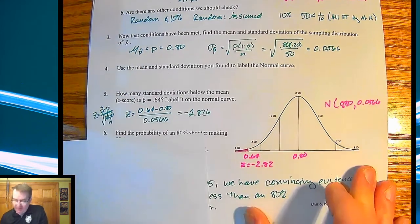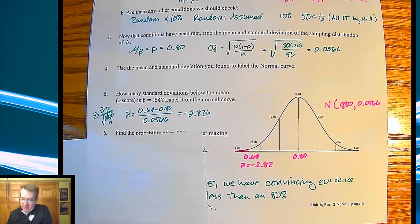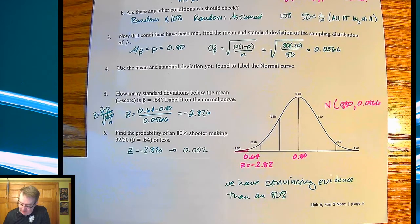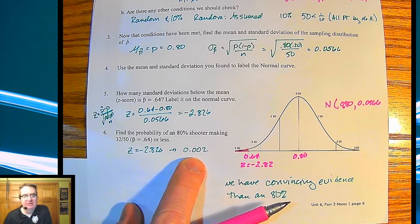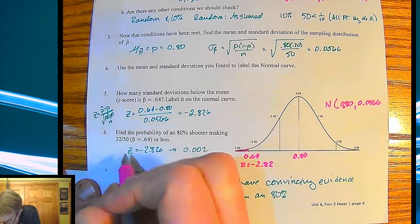So find the probability of an 80% free throw shooter actually making only 64% of their shots. So we go through normal CDF or through your table and we get a 0.002 p-value here. So this is our p-value.